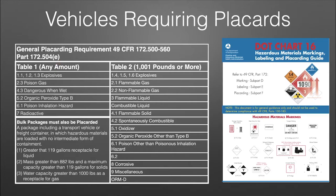Table 1 is the harshest of the commodities — I commonly refer to that as 'ethyl methyl death glow and boom.' We're dealing with harder explosives, poisonous gases, dangerous when wet, peroxides, organic peroxides specific to Type B, poison inhalation hazard — you smell it, then you die type thing — and of course radioactives. For any Table 1 commodity, even a quarter of a teaspoon requires you to placard your vehicle. Table 2 commodities require 1,001 pounds or more, and basically lists out the rest of the commodities not in Table 1.